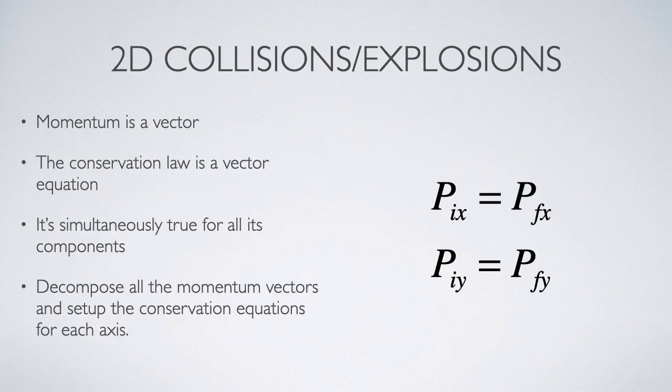2D collisions are only slightly more difficult to deal with. Momentum is a vector, and so the conservation law is a vector equation. And we know that the fundamental rule of doing vector math is that that equation is simultaneously true in all its components. So we have to decompose all of the momentum vectors into our chosen coordinate system, and then we write conservation equations for both the x components and the y components.